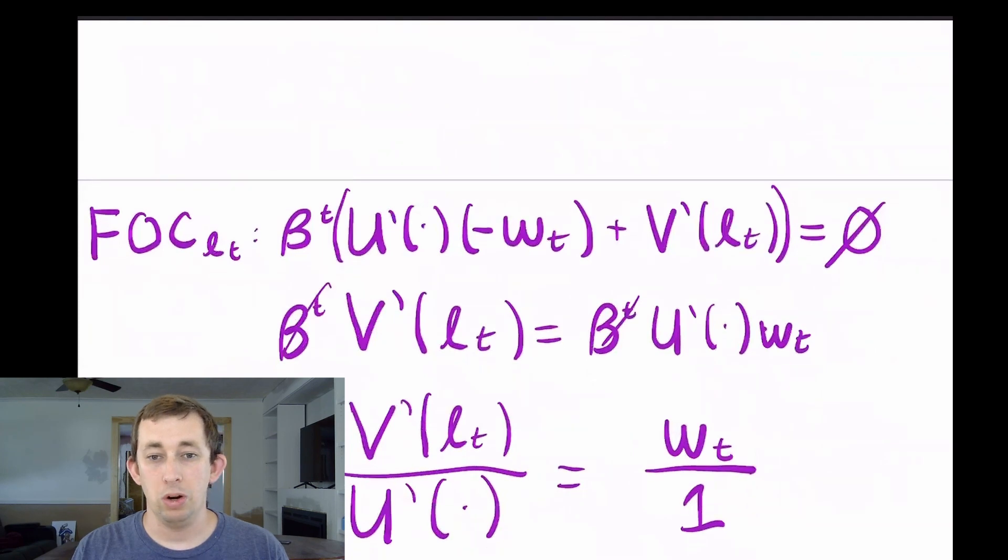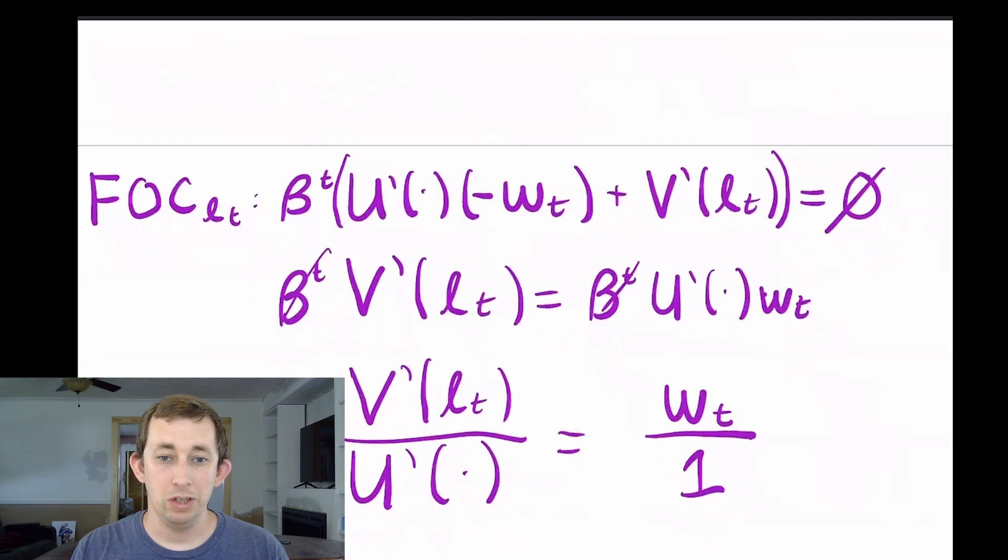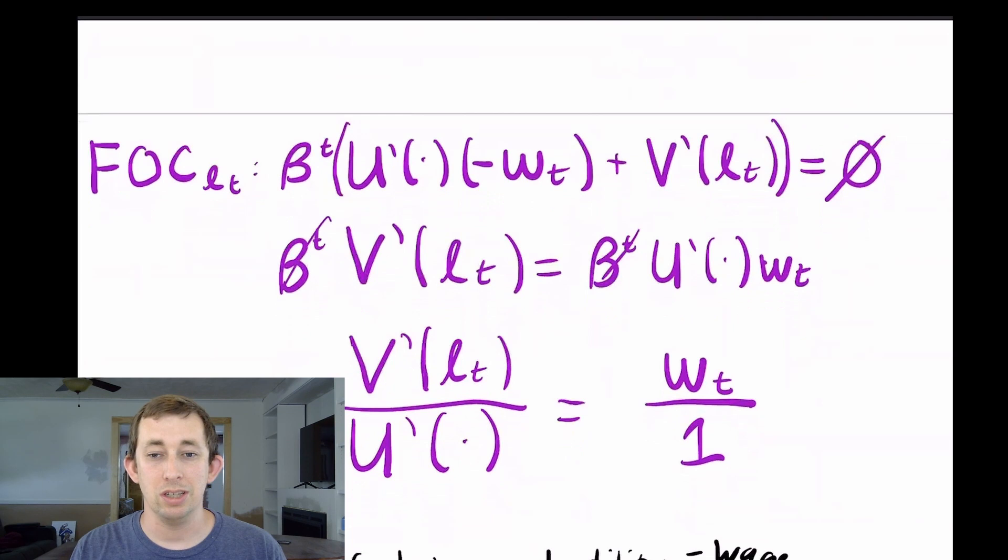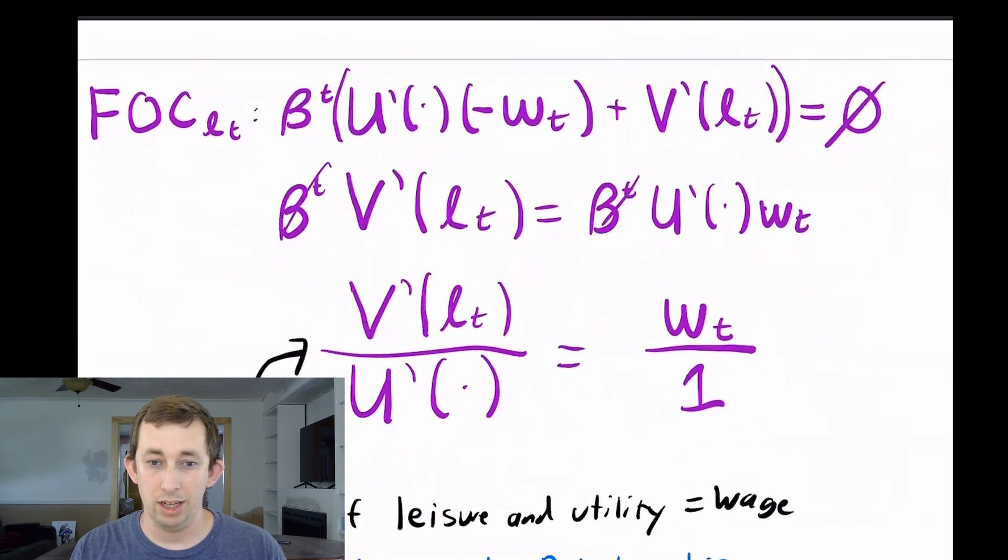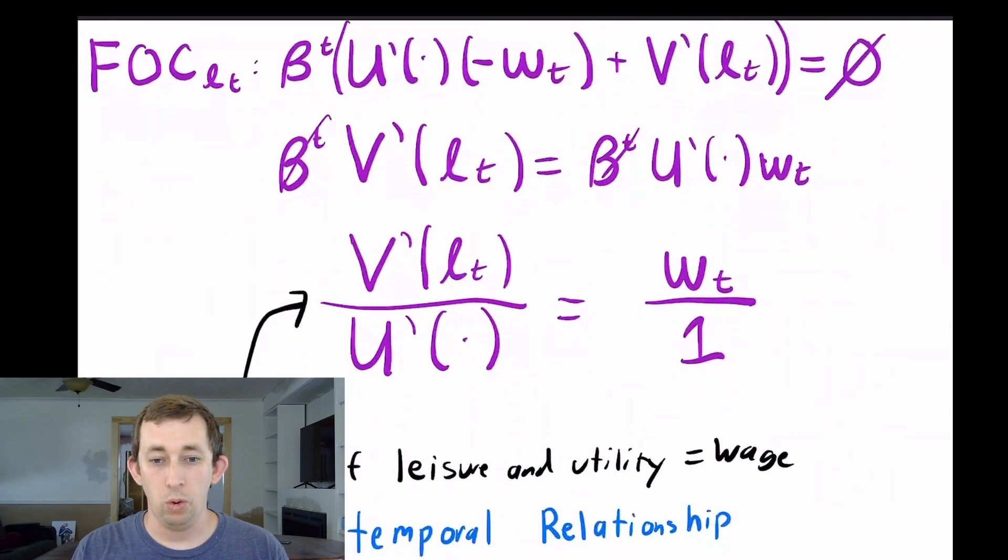Now I can take the first order condition of that same problem with respect to leisure. I'm going to get this lovely mess right here, I can cancel some betas, I know it's going to equal zero because we're taking a first order condition. This is telling me that the fraction of marginal utility of leisure over the marginal utility of consumption equals the wage over one. All that's telling me is that the tradeoff between leisure and consumption equals wage. And that is what we call an intratemporal relationship because it's everything in the same time period.